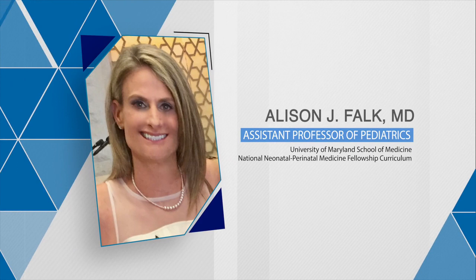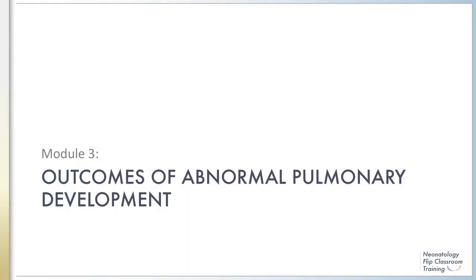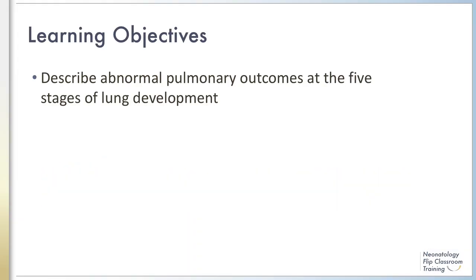Module 3 will focus on Outcomes of Abnormal Pulmonary Development. By the end of the third module, the learner will be able to describe outcomes of abnormal pulmonary development occurring during different stages of lung development.